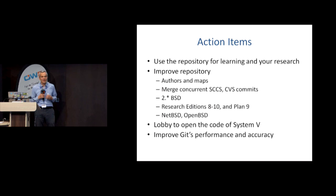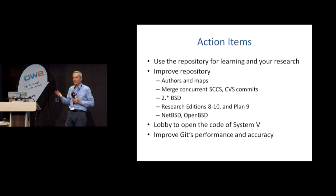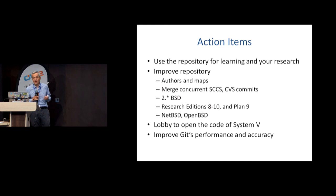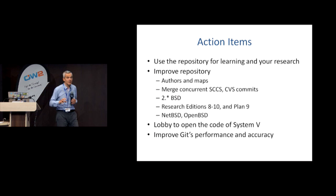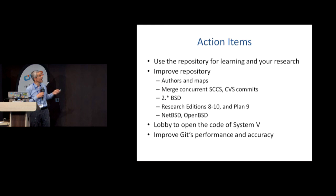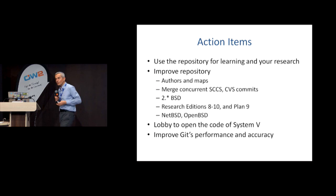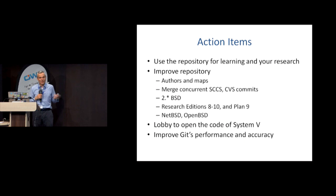As action items, what do I want you to take away? You can use this repository for learning — see all the editions and learn about them — and if you do research, use it. I invite you to improve it: about 50% of the files are attributed to authors, many are not. You can merge other concurrent SCCS and CVS commits, add BSD releases not yet in the repository, add new research editions recently released to the public — editions 8 through 10 and Plan 9. If you have powerful friends, you can lobby them to release later editions of the Unix source code such as System V, which is very influential and would allow us to build another timeline down to OpenSolaris. And if you work with Git, you can work to improve Git's performance and accuracy so that it doesn't take three days to tell you which are the oldest lines in the system.